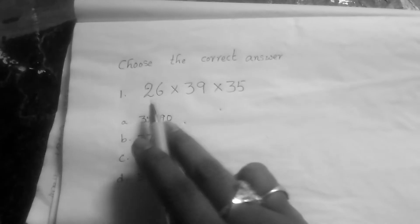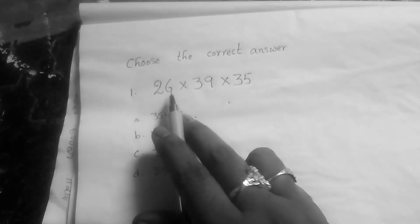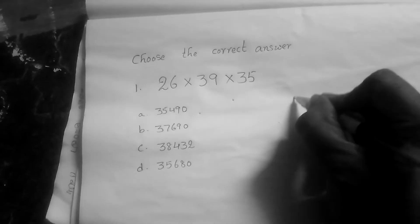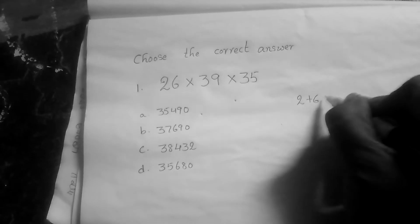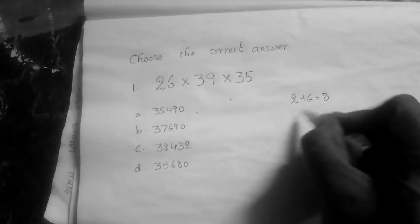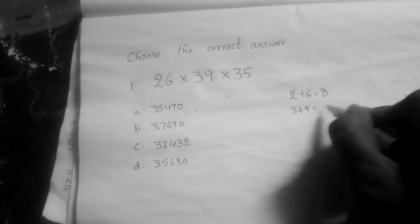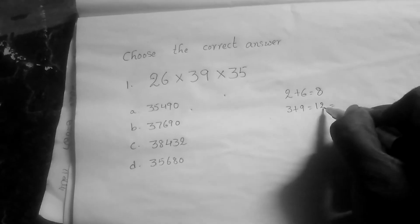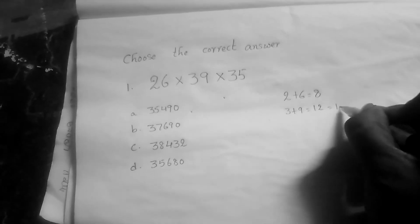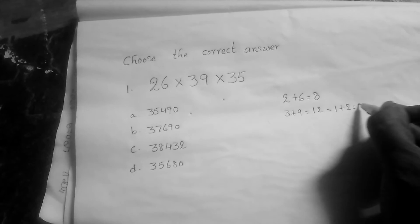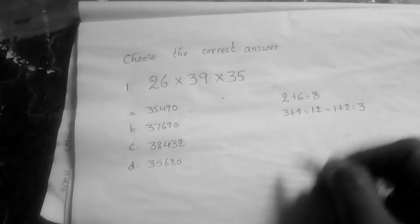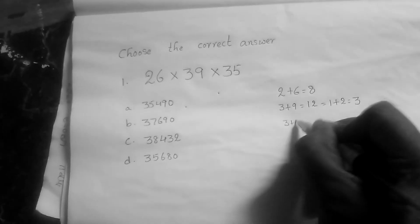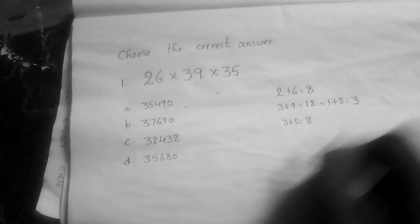Now you have to observe what are the numbers. In first number 26, you have to write 2 plus 6, that is equal to 8. In 39, 3 plus 9 equals 12. When we get that double-digit number, you have to add those numbers and get a single digit number, so 1 plus 2 equals 3. Then 3 plus 5, that is equal to 8.